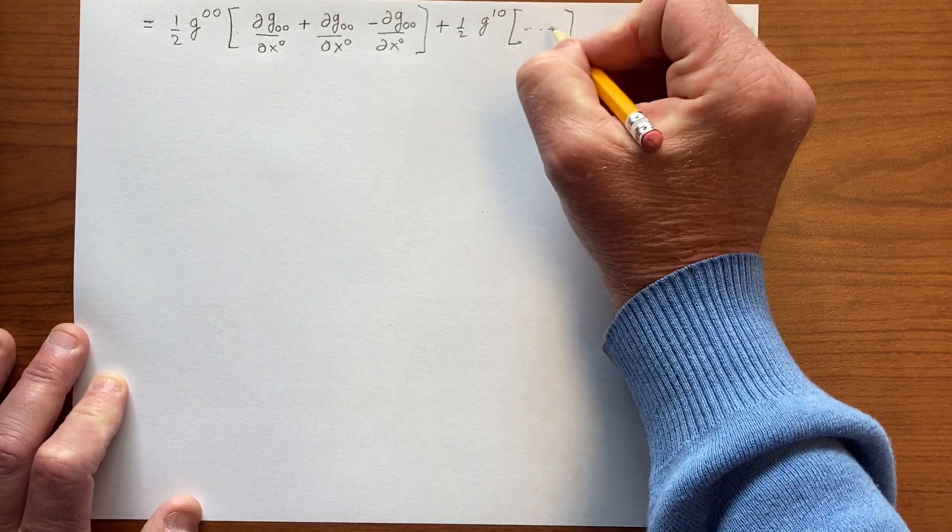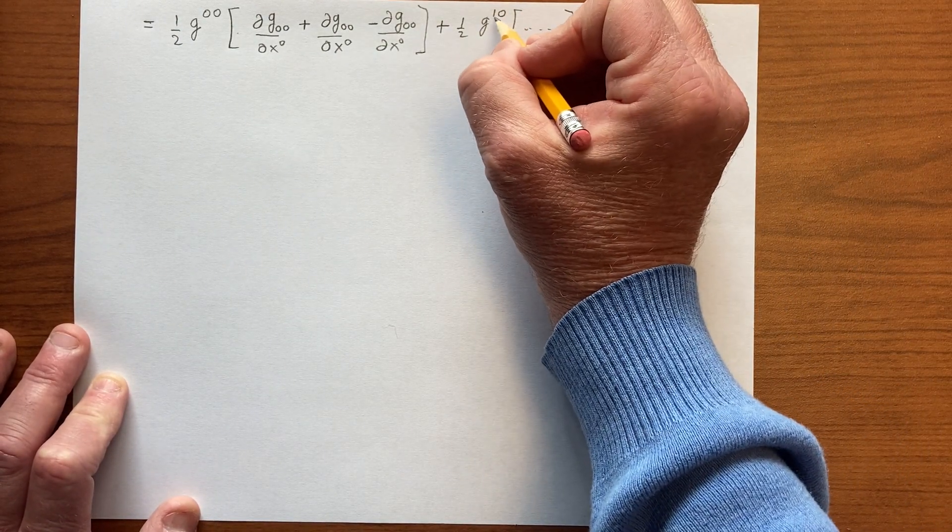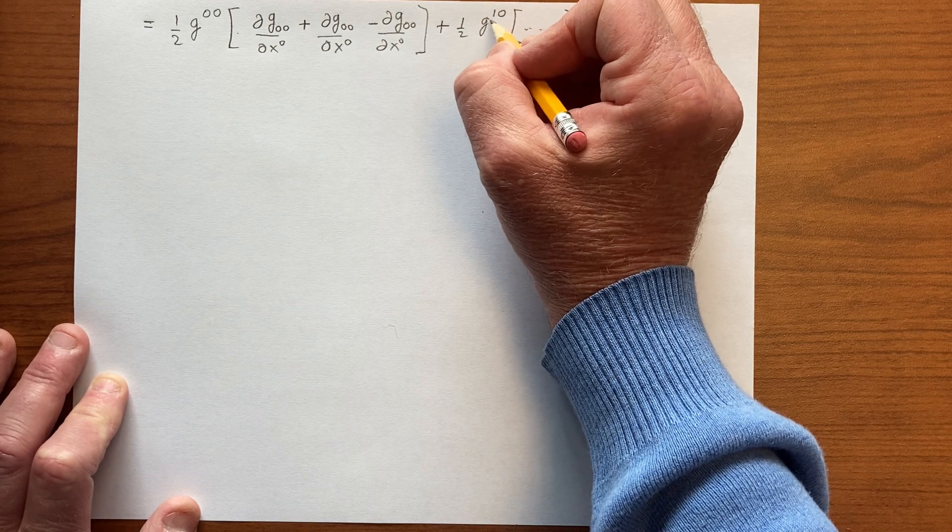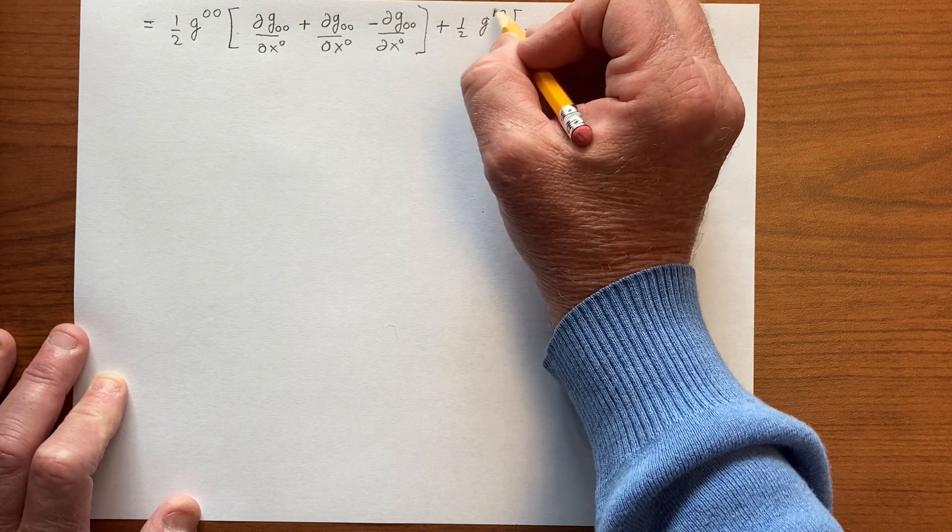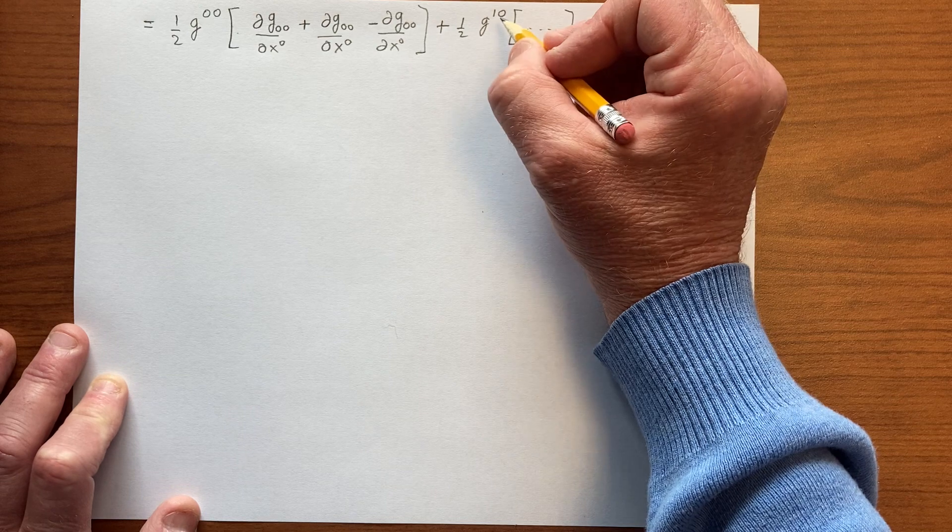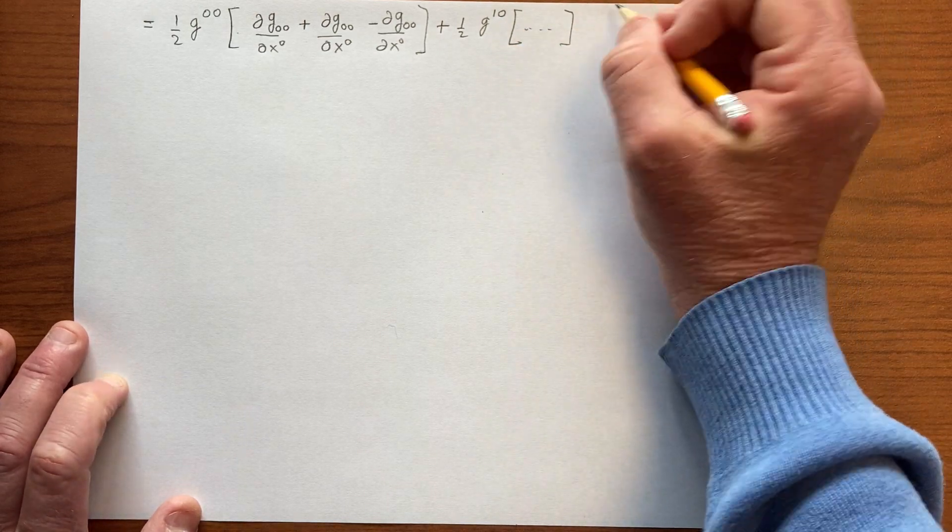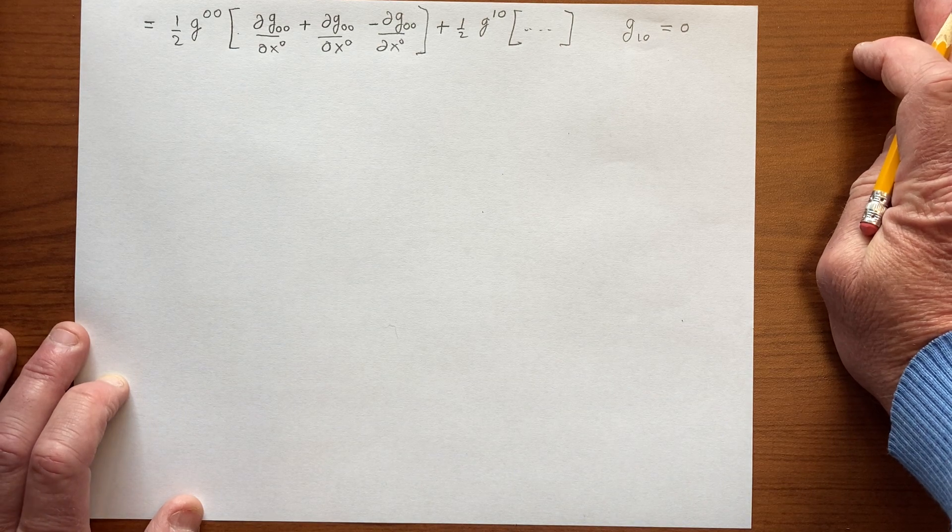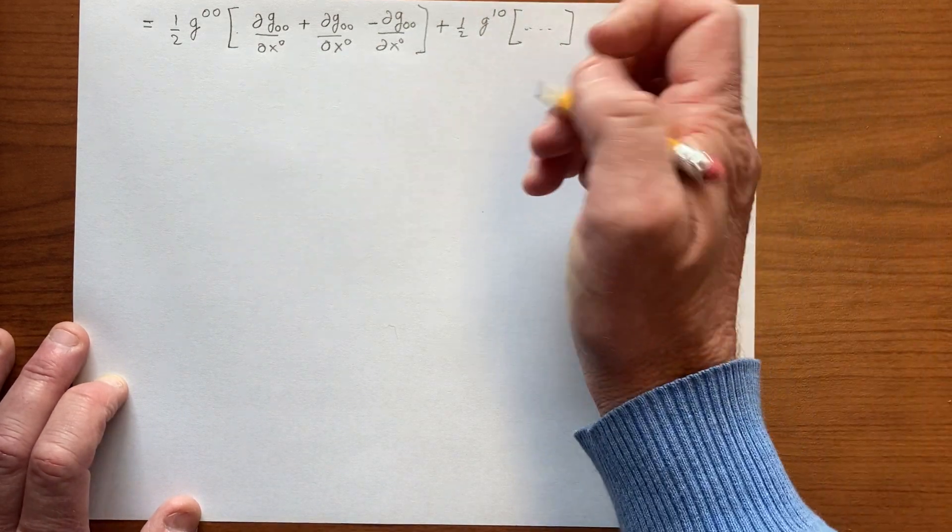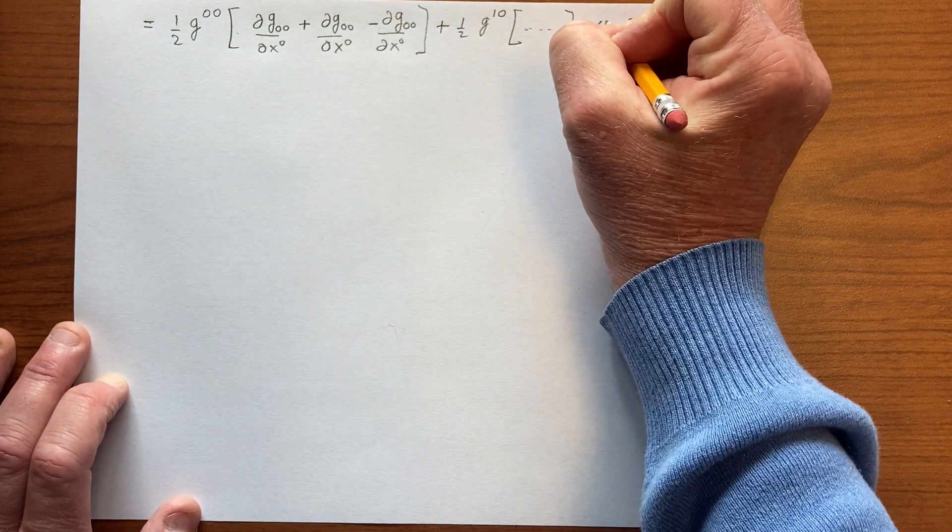So that makes the entire thing 0, although it's really the inverse that is used here. But of course, if the off-diagonal terms on g_10, if g_10 is equal to 0, so will g^10 be 0. So there's nothing more to consider here. This whole thing is going to be equal to 0.